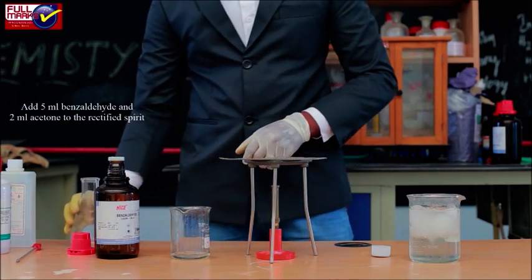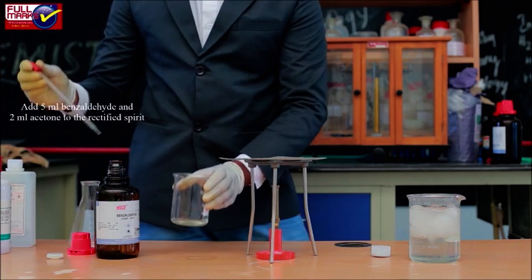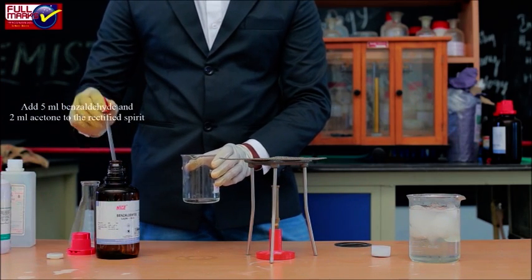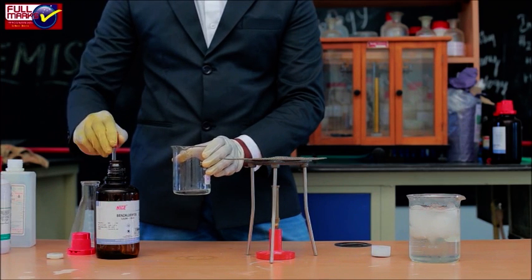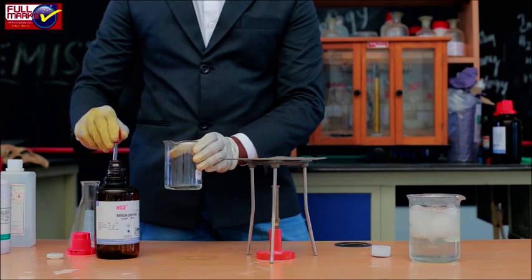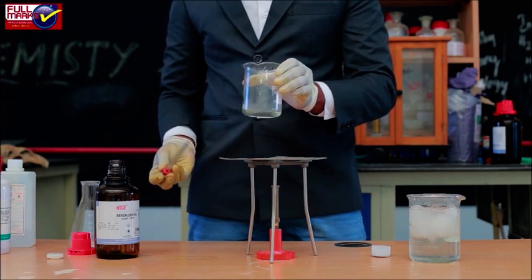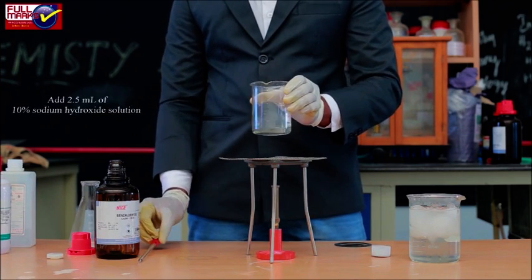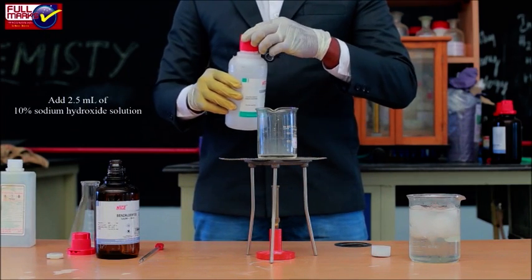Add 5 ml benzaldehyde and 2 ml acetone to the rectified spirit. Cork the flask and shake it to get a clear solution. Now add 2.5 ml of 10% sodium hydroxide.